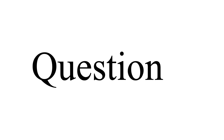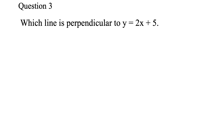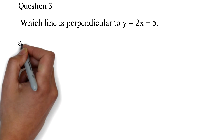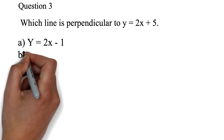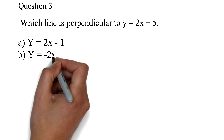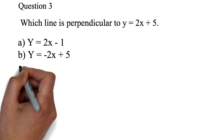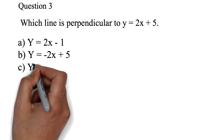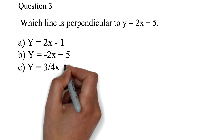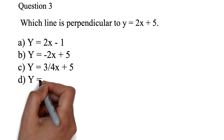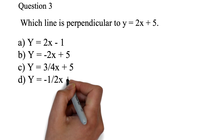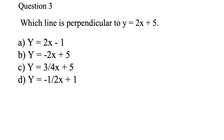Question 3: Which line is perpendicular to y equals 2x plus 5? a. y equals 2x minus 1. b. y equals negative 2x plus 5. c. y equals 3 over 4x plus 5. d. y equals negative 1 over 2x plus 1.